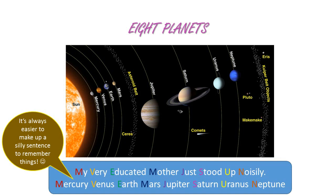My very educated mother just stood up noisily. Mercury, Venus, Earth, Mars, Jupiter, Saturn, Uranus, Neptune.